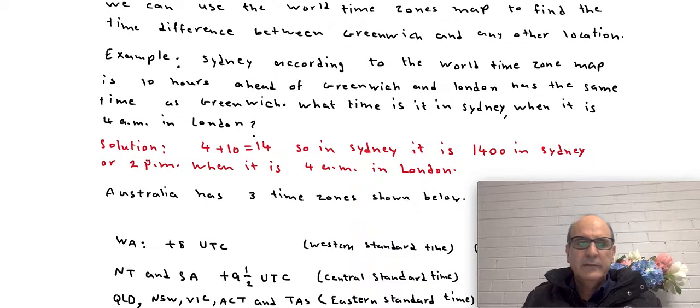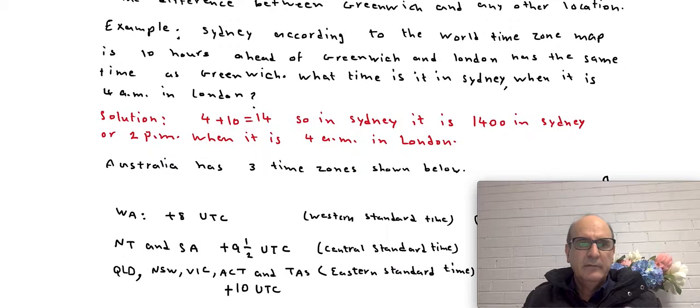Let's have a look at some examples. Sydney according to the World Time Zone map is 10 hours ahead of Greenwich. So if you live in Sydney your time is 10 hours ahead of Greenwich. And London which is next to Greenwich or close to Greenwich, they are on the same time zone. They have the same time. So whatever time is in Greenwich it is the same in London.